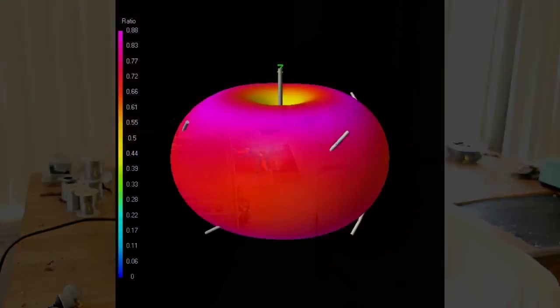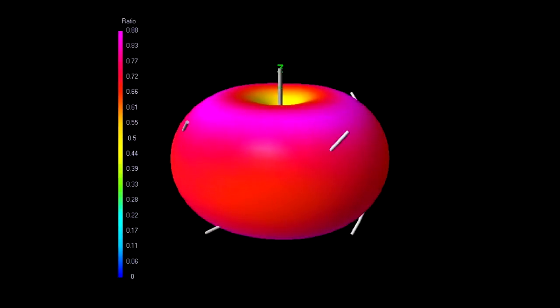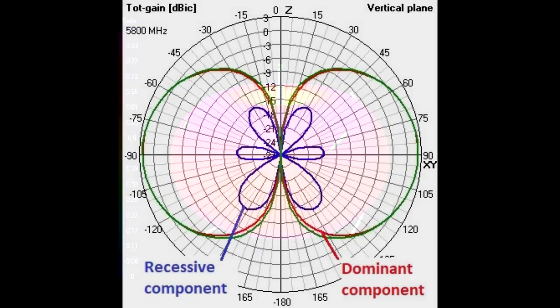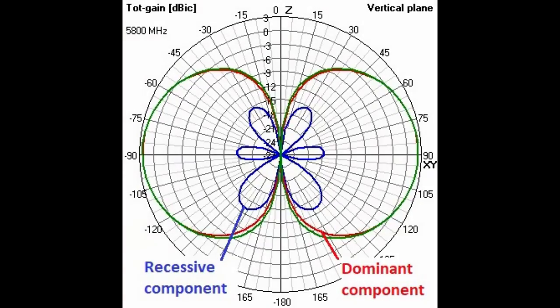Before we go on we need to discuss a few terms. The first is axial ratio. Axial ratio is the ability of an antenna to rotate the signal properly, and this is expressed as a ratio of the dominant component — in these examples right-hand rotation — versus the recessive component, which is left-hand.